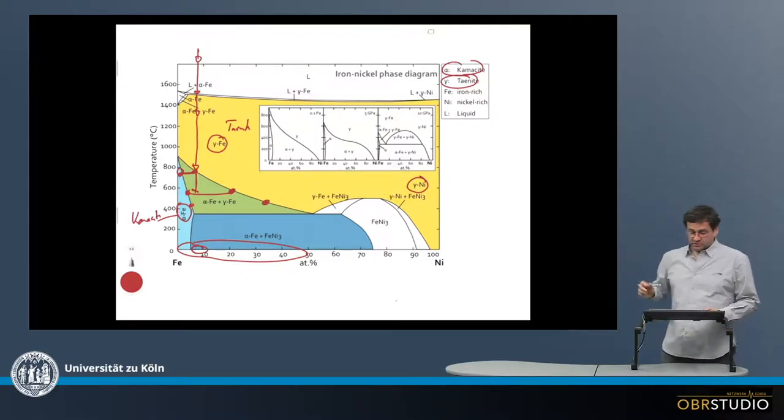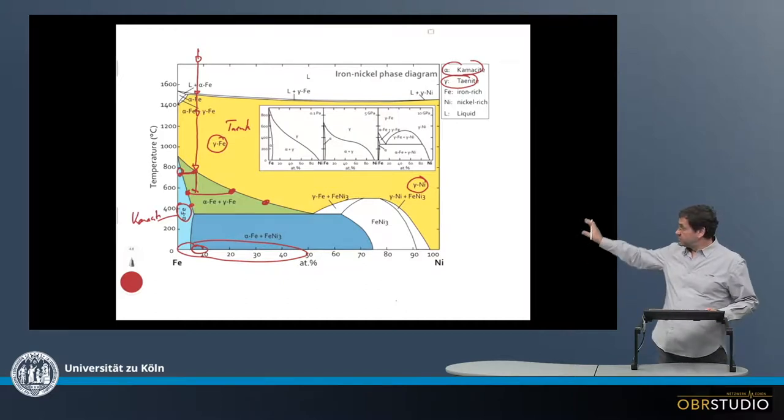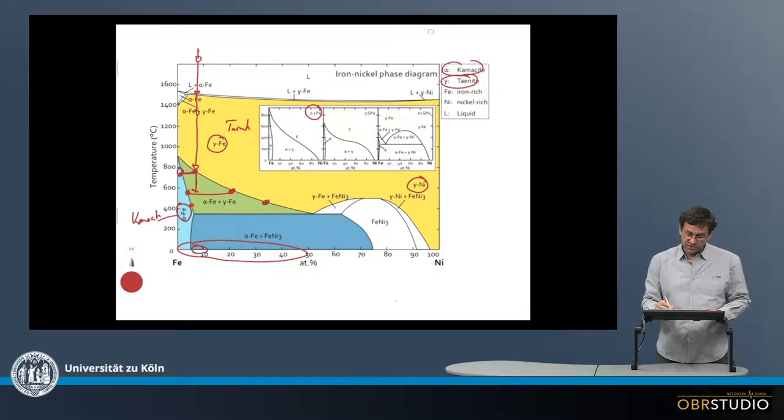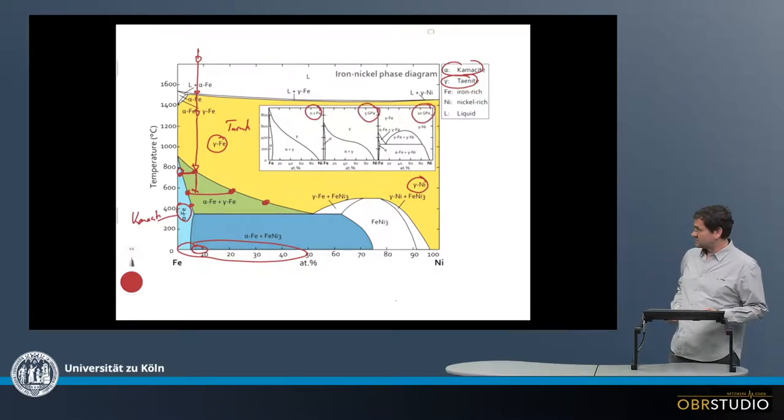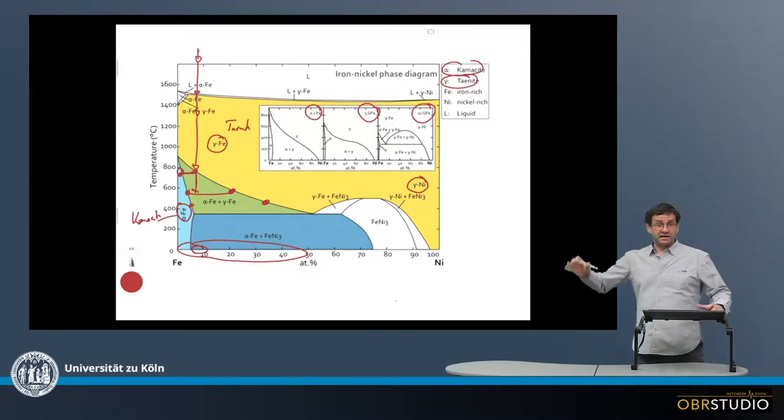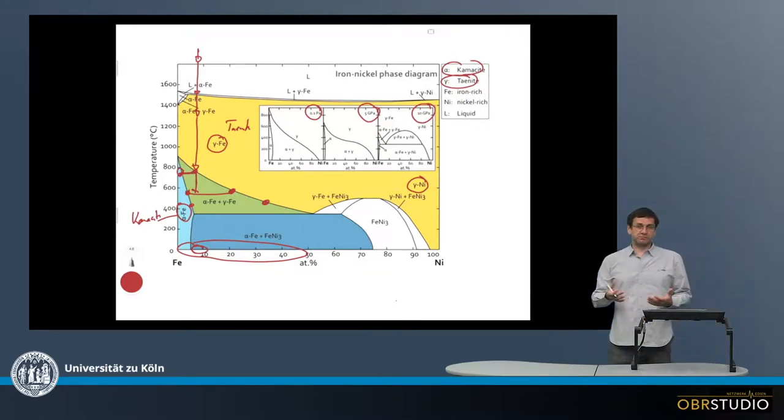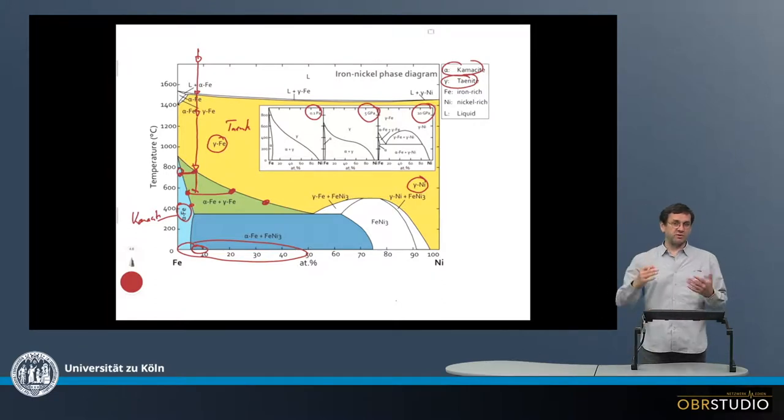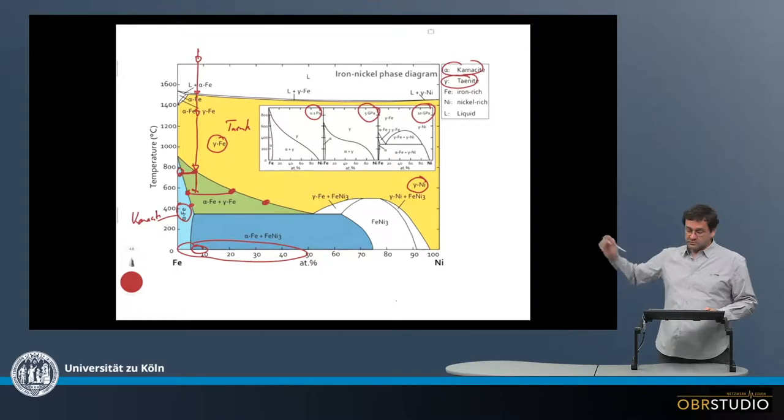The phase diagrams also depend on the pressure. This is shown in this little inset here. Here are three pressures: 0.1 GPa, 5 GPa, and 10 GPa. Typically in asteroids, the pressure inside usually never increases above something like 1 GPa. So usually only this one single diagram here is important.